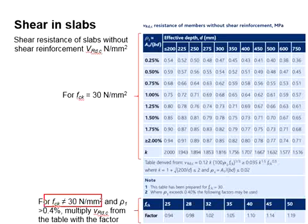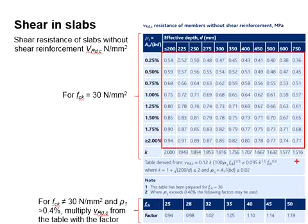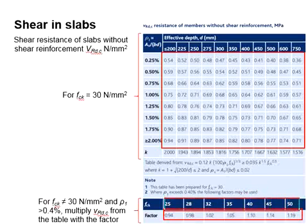For the concrete strength other than grade 30, and for the percentage of reinforcement bar more than 0.4%, the VRd,c can be multiplied with the factor here in accordance to the concrete grade.